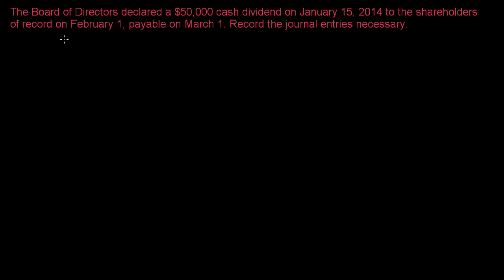There are typically three dates that are very important when you're talking about cash dividends. The first one is the declaration date. This is the date that the board of directors declares that there's going to be a cash dividend, and this is also the date that a liability is generated. Once the board of directors declares the dividend, it has to be paid.